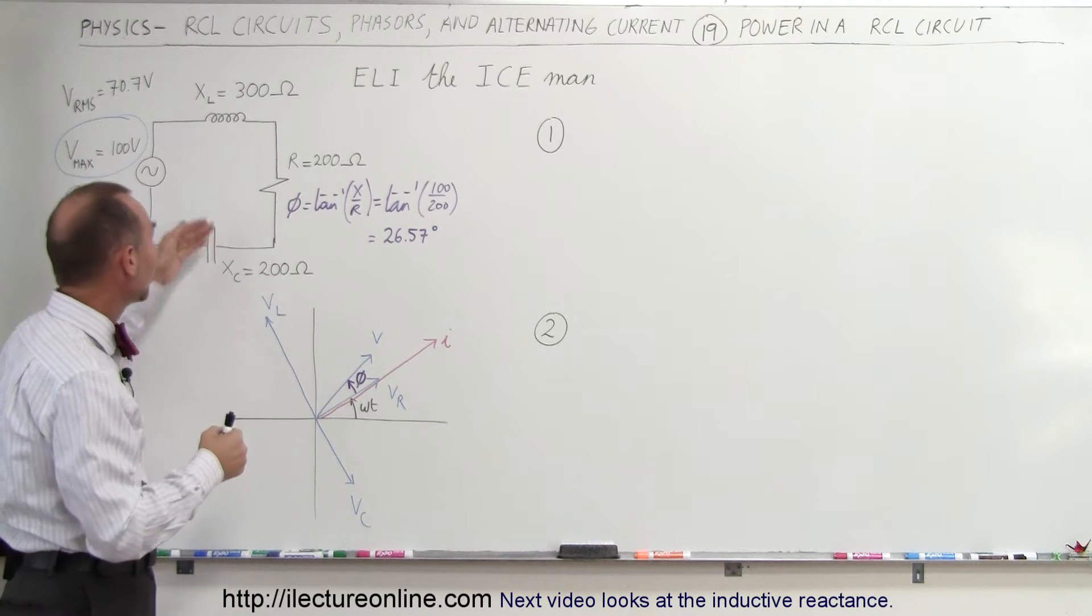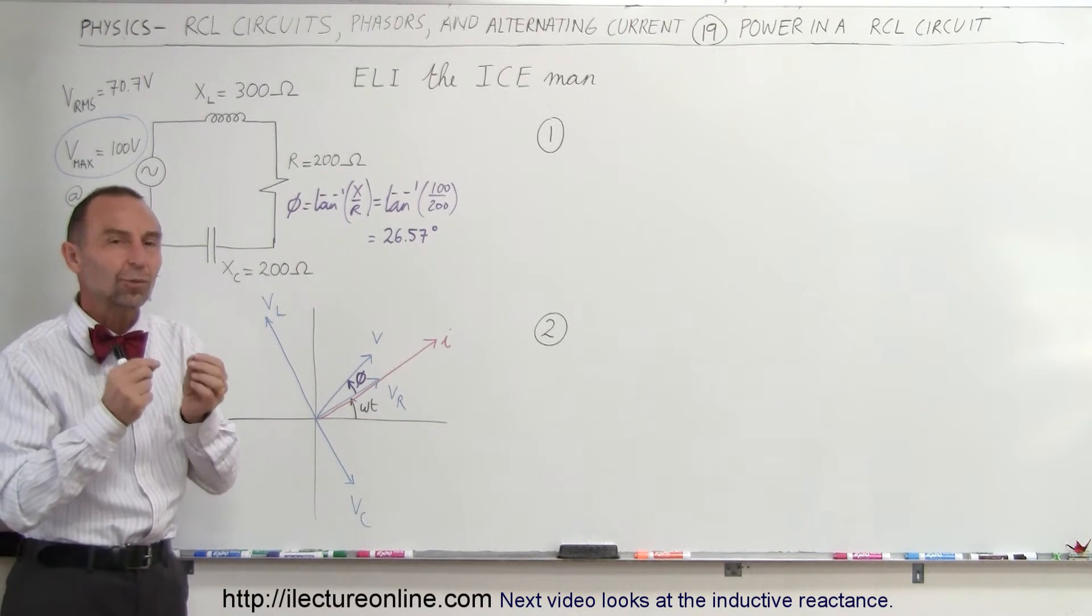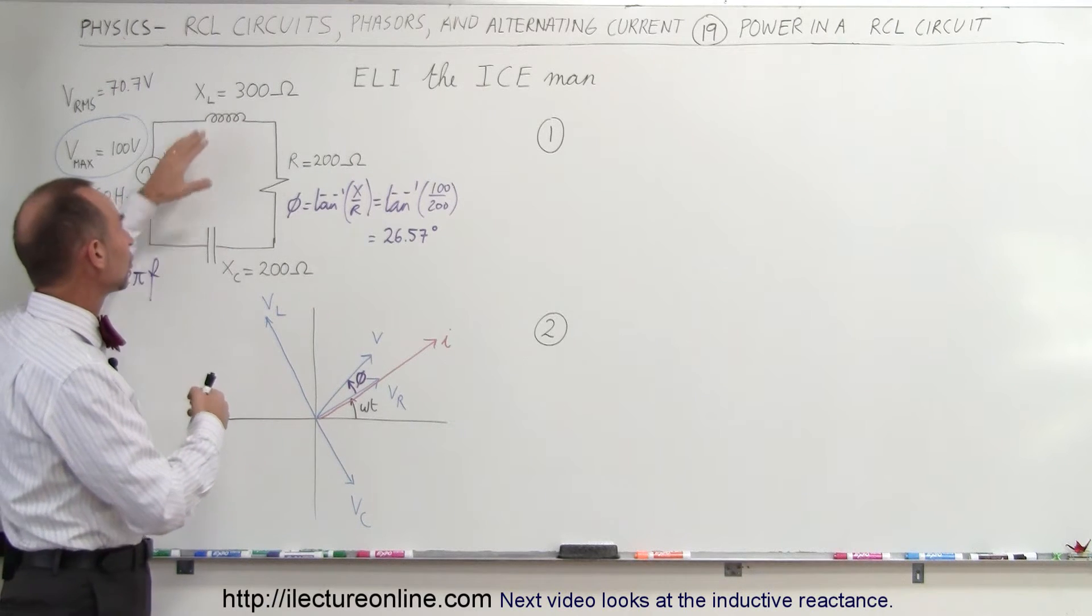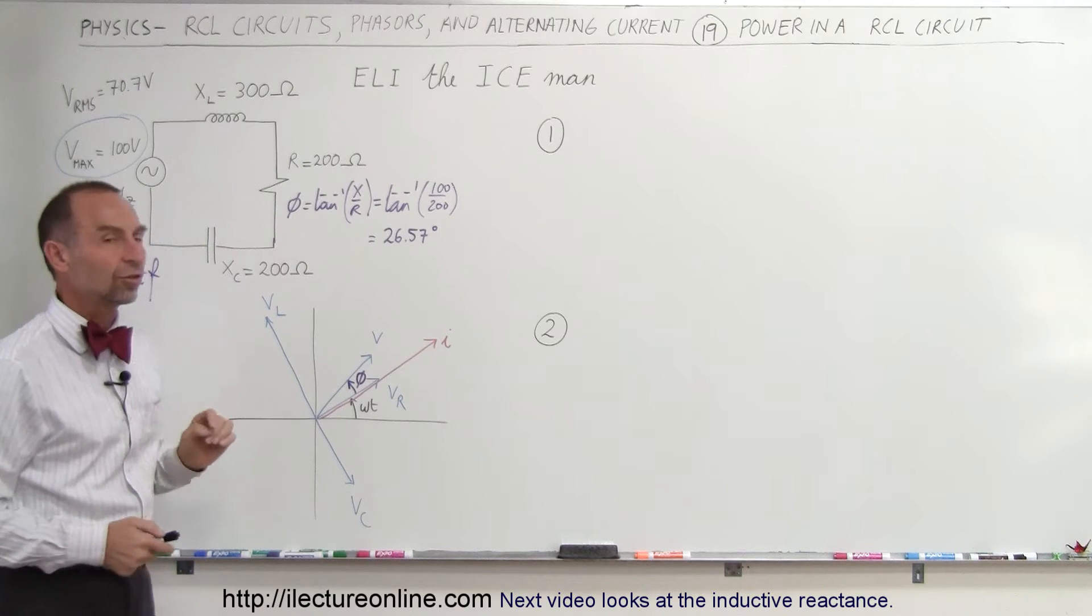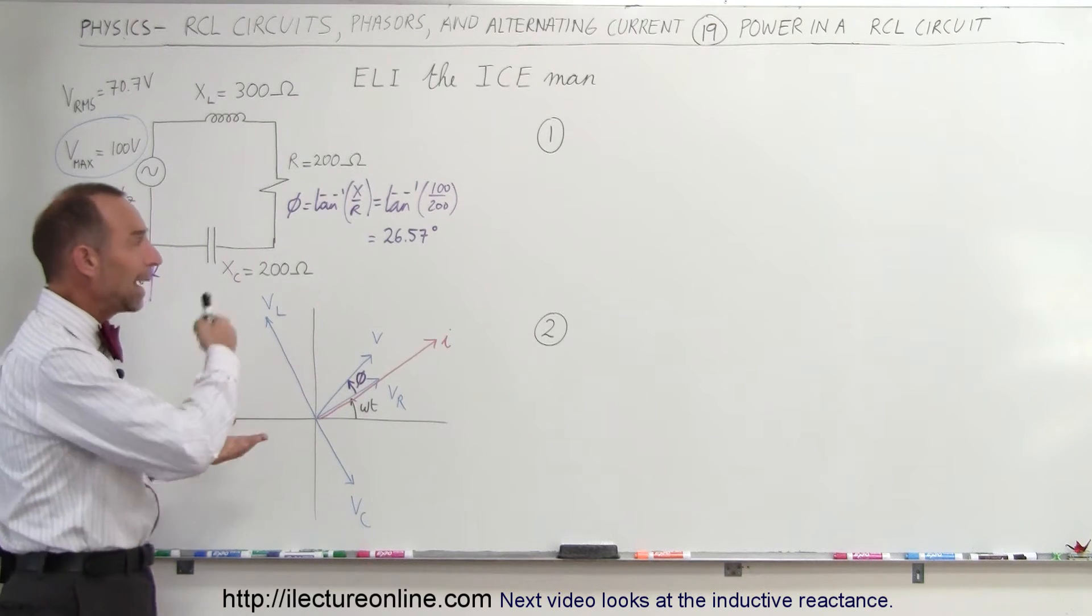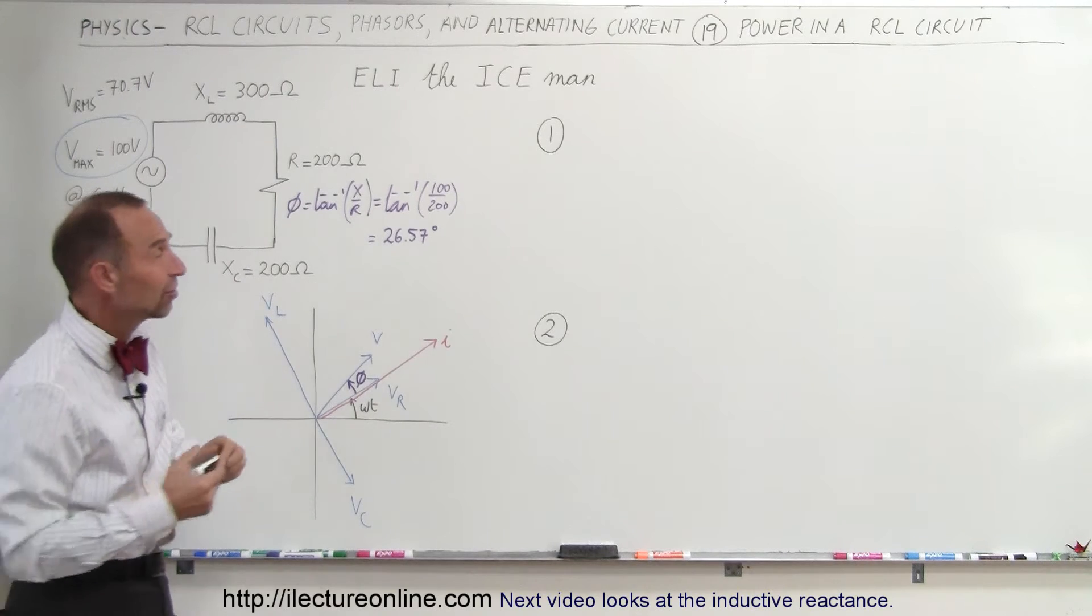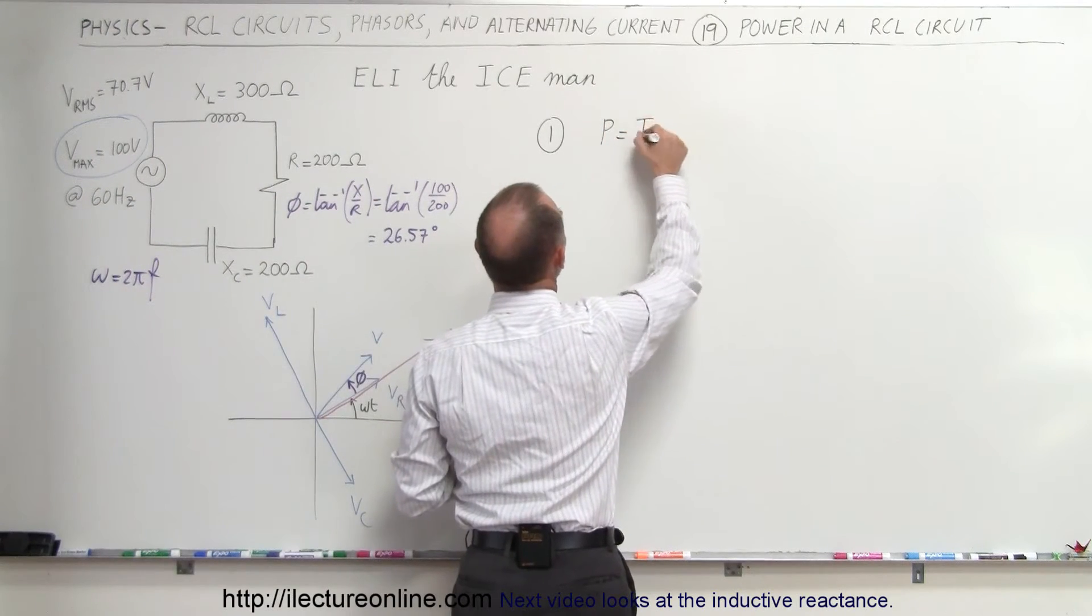Therefore, a pure capacitor and a pure inductor, assuming that in theory there's no resistance whatsoever in those components, do not consume any energy, only the resistor does. So there's two ways in which we can find the power consumed by an RCL circuit. The first one is simply using the equation that power is equal to I squared R.